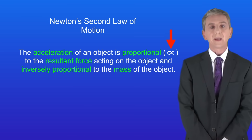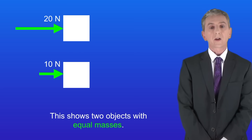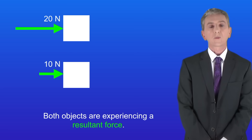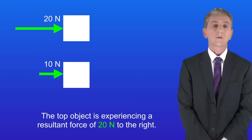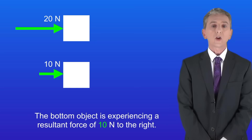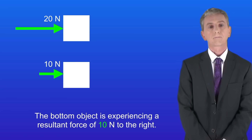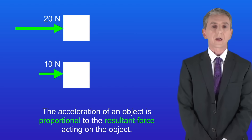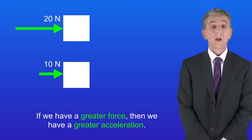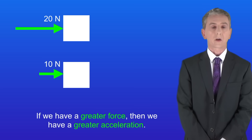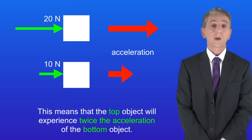So what does this actually mean? I'm showing you here two objects with equal masses. Both objects are experiencing a resultant force — the top object is experiencing a resultant force of 20 newtons to the right and the bottom object is experiencing a resultant force of 10 newtons to the right. As the acceleration of an object is proportional to the resultant force, a greater force means a greater acceleration. So the top object will experience twice the acceleration of the bottom object.